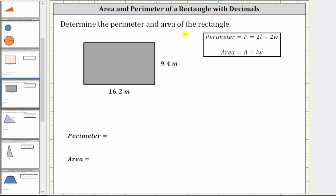We're asked to determine the perimeter and the area of the rectangle. We're looking at the rectangle, notice how the length is 16.2 meters and the width is 9.4 meters.